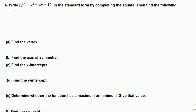Write f(x) equals x squared minus 4x minus 12 in standard form by completing the square. We want to put this in standard form, which is a times quantity x minus h squared plus k — whether we write y equals or f(x) equals doesn't matter. This is the standard form.